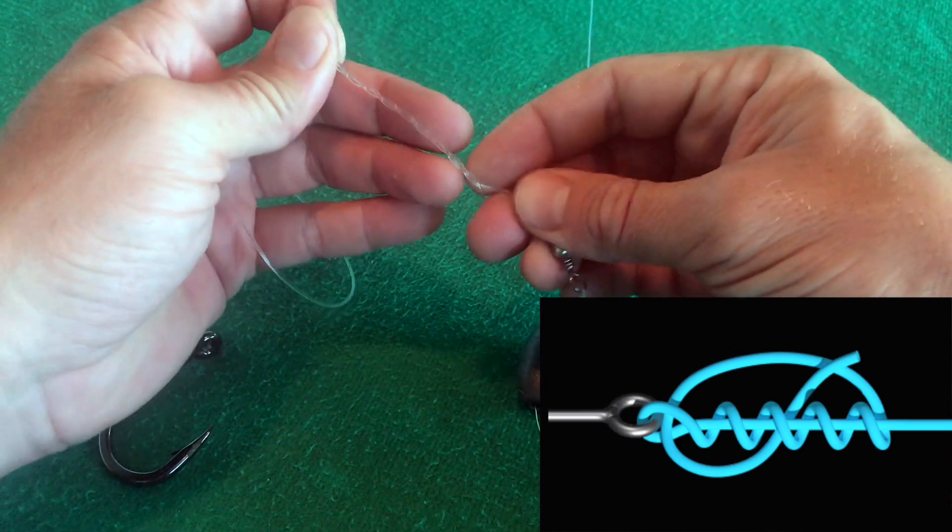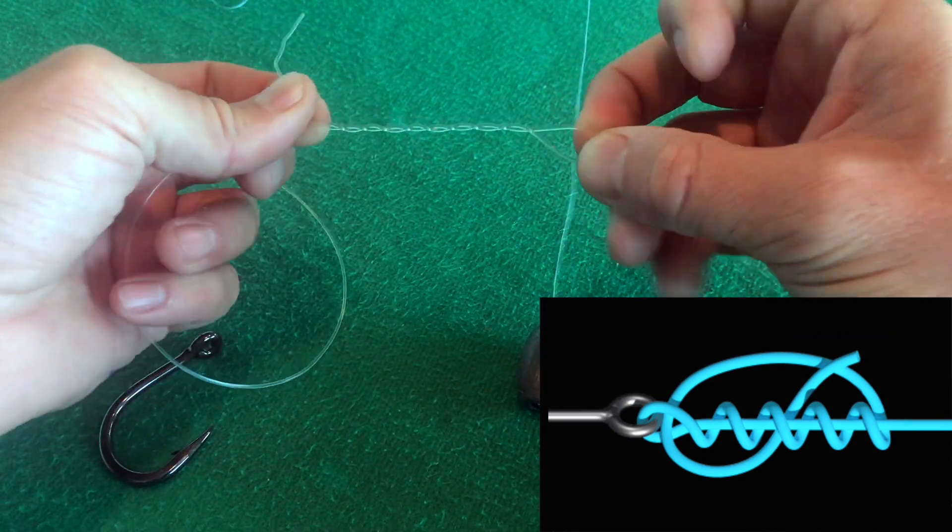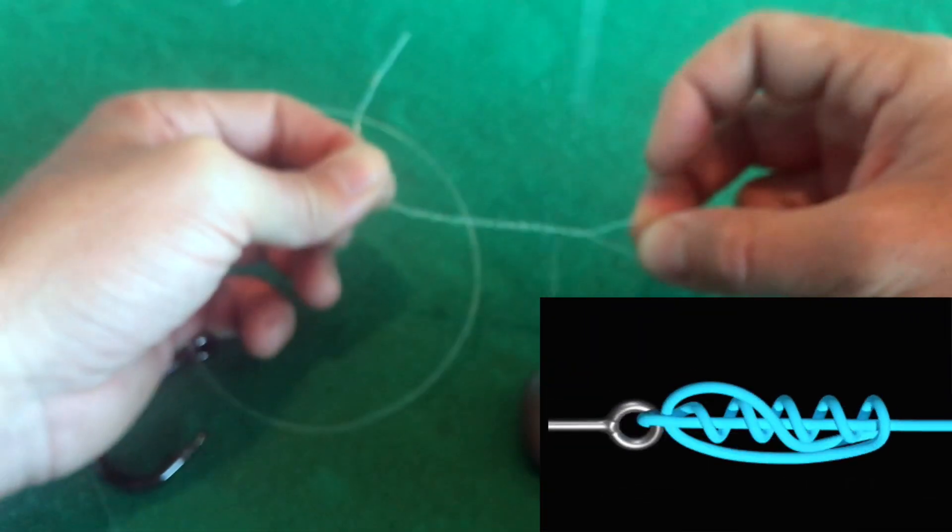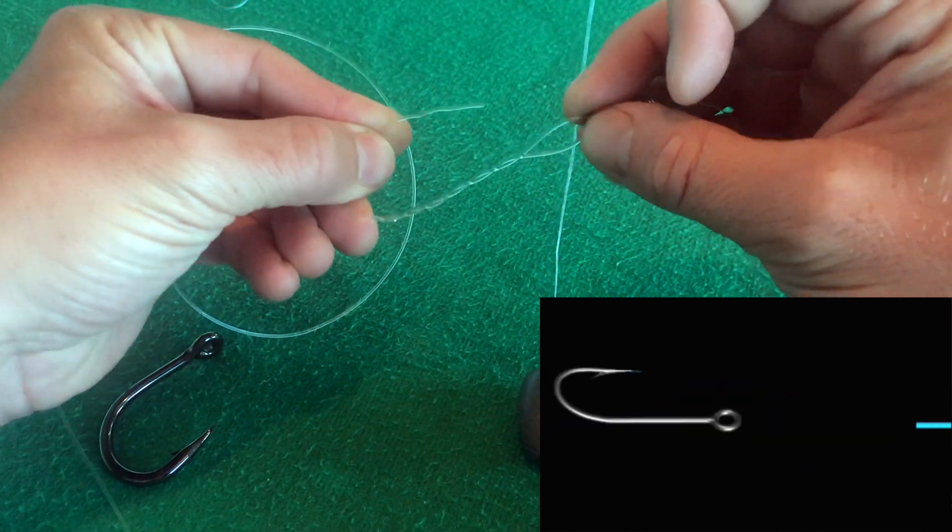I'm going to do seven times around. And I'm going to wet this knot right now because I do not want it to have abrasions in it.